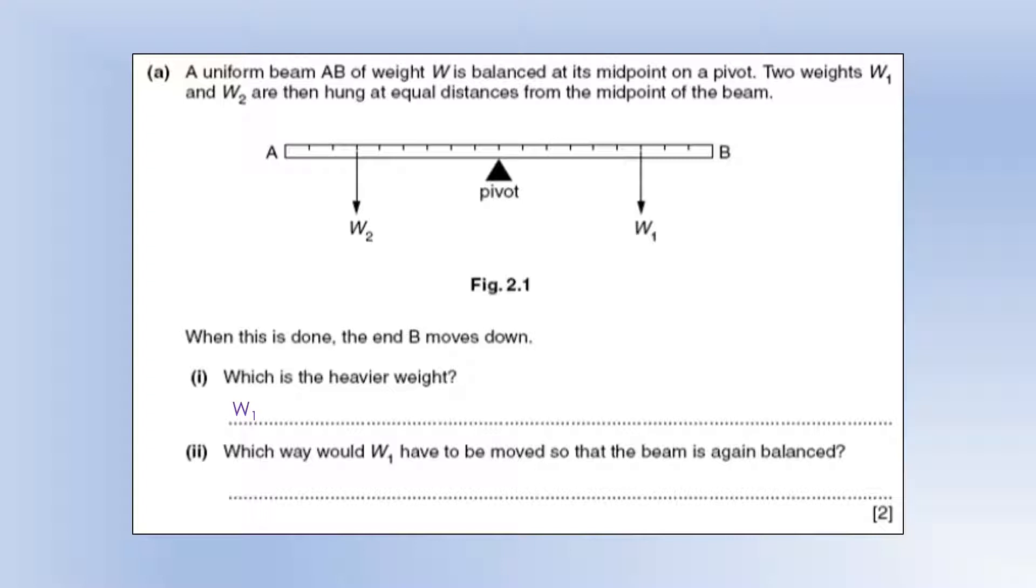Which way would W1 have to be moved so that the beam is again balanced? Well, we would have to move it to the left to decrease its perpendicular distance, to decrease its moment until its moment is equal to the moment of W2.